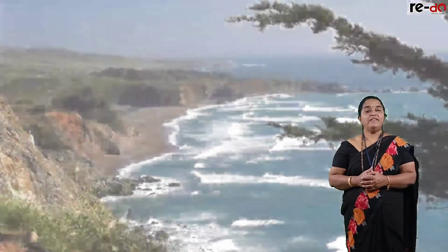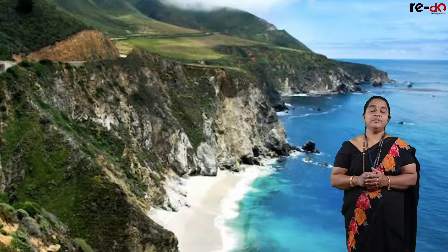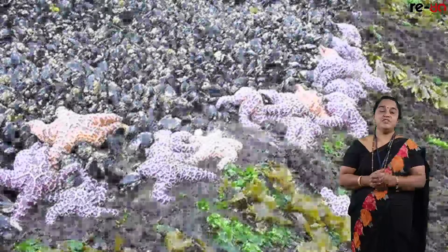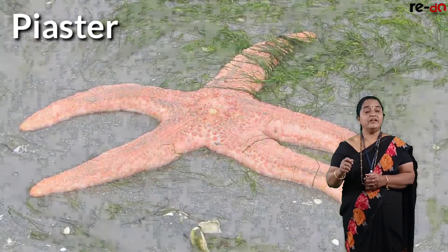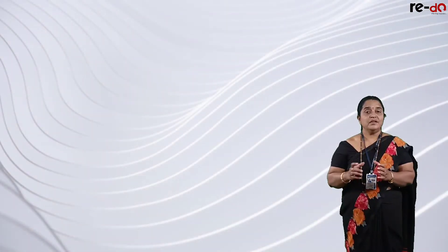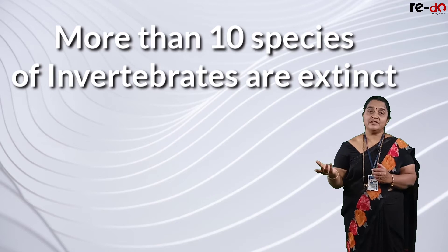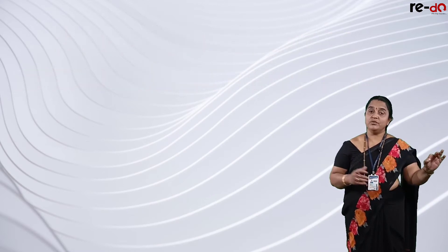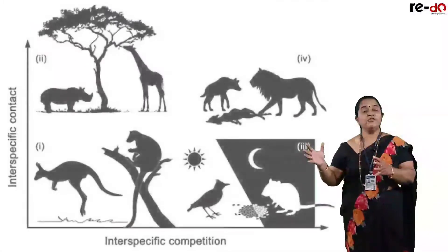Along the Pacific coast of America, in the intertidal region, one predator was removed — a starfish belonging to the species Pisaster. Due to the removal of this predator from the intertidal region, more than 10 species of invertebrates became extinct, because without the predator, these 10 invertebrate species underwent interspecific competition that led to their extinction.